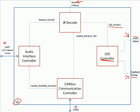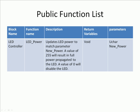This is an example of a public function list. The first thing defined is the block name — we specify which block this is associated with. The LED controller block has a function named LED power, which updates LED power to match the parameter 'new power'. Any real function will likely have a much more detailed description. It returns nothing, meaning you don't expect to get any information back — you just trust that it does what it's supposed to. Its parameter is 'new power': you tell it what power you want and it takes care of the rest.